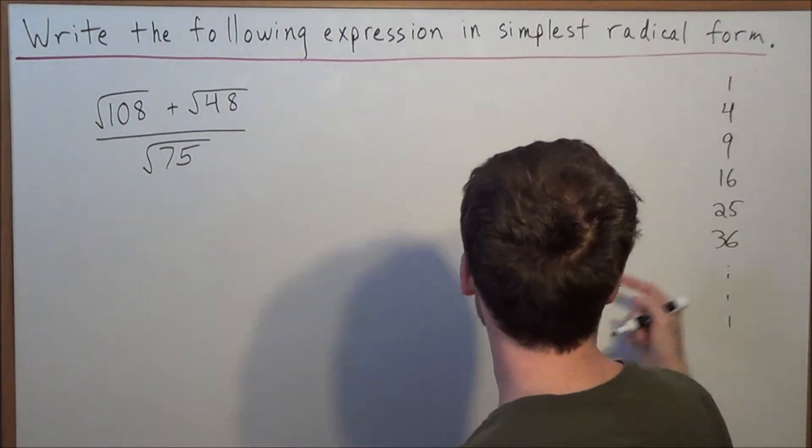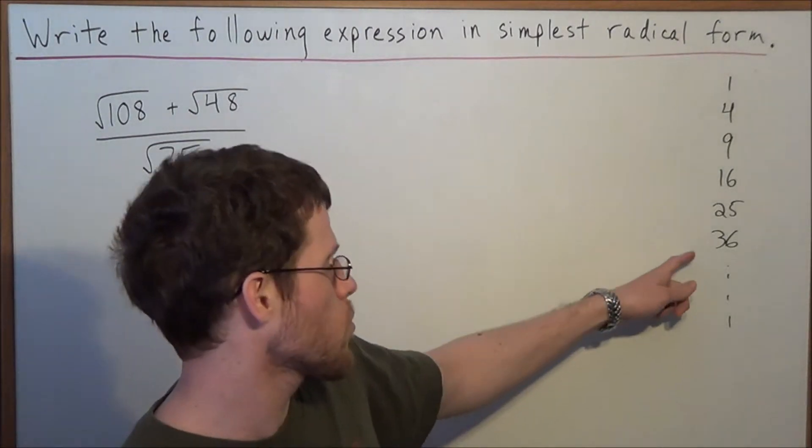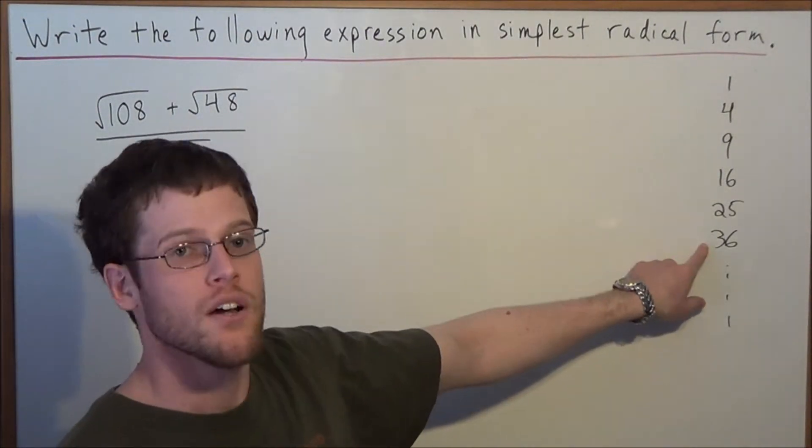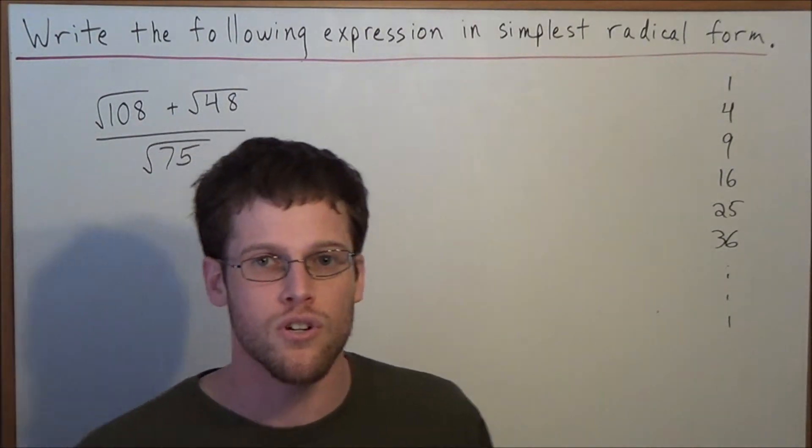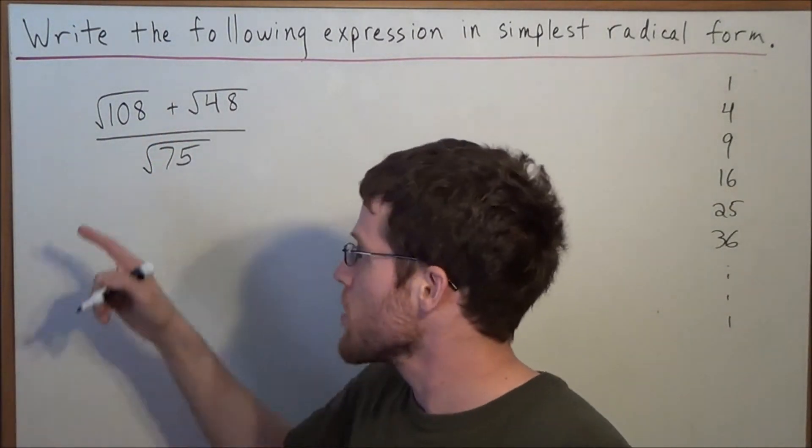So we're looking at radical 108, and we could break it down with 9, but if we look further down the list, we'll see that 108 could be broken down as 36 times 3. So you could use a calculator to check which numbers divide into the numbers under the radical.